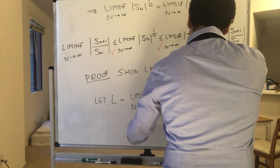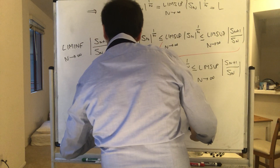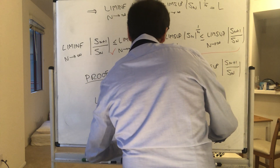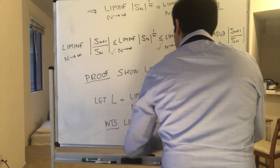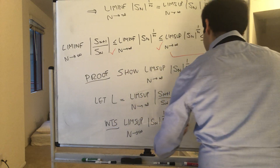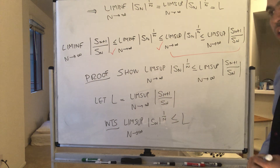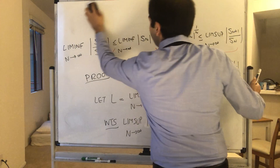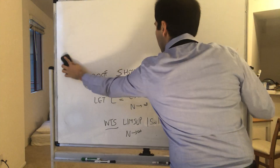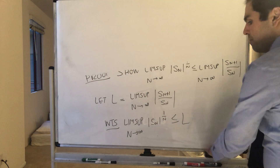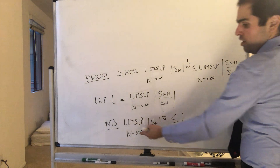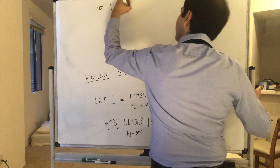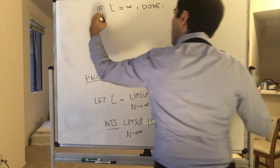L is the limsup of S_{n+1} over S_n, and what we want to show is that the limsup of the root part is less than or equal to L. Notice first of all: if L is infinity, then we're done, because the limsup is always less than or equal to infinity. So assume L is finite.